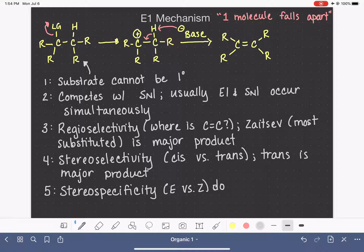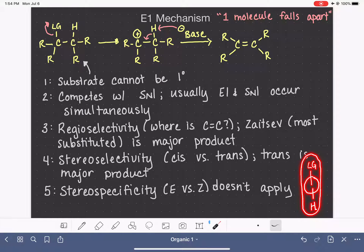Remember that in the E2 mechanism, stereospecificity was a factor because the leaving group and the hydrogen had to be anti-coplanar to each other. And so we had to figure out how to twist the molecule into a conformation that satisfied this requirement because it was all happening at the same time. The leaving group and the hydrogen were both being eliminated at the same time.